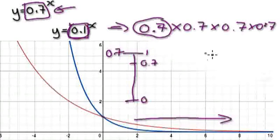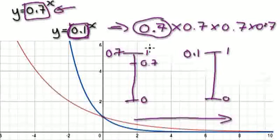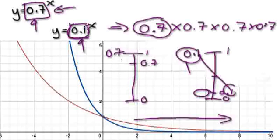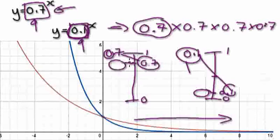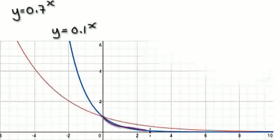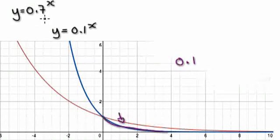If you compare 0.7 to 0.1, where the starting point is also 1, multiplying by 0.1 each step takes you to a much lower level than multiplying by 0.7. So 0.1 to the power of x gets smaller a lot faster than 0.7 to the power of x. That's why on the positive x side, the 0.1 line decreases much faster than the 0.7 line.